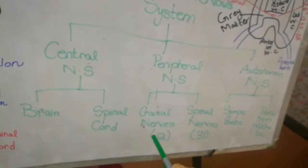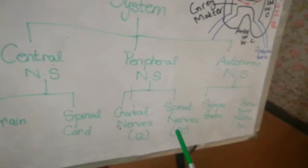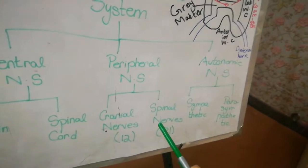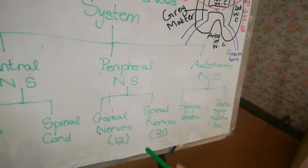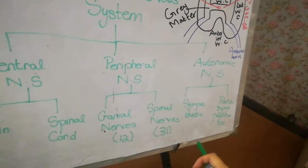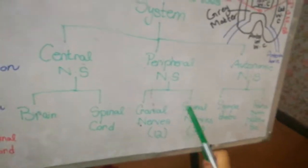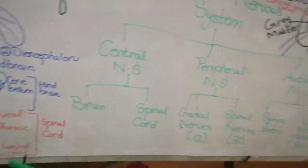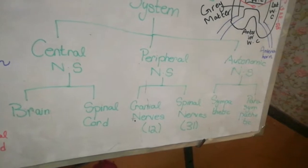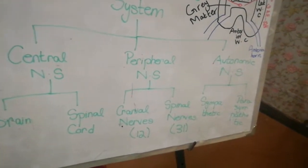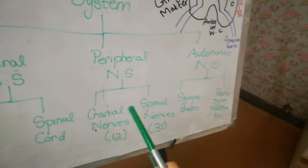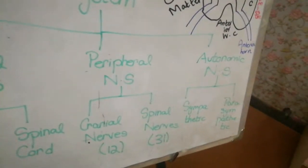Cranial nerves are 12 in pairs and the spinal nerves are 31 in pairs, divided into five regions: cervical, thoracic, lumbar, sacral, and coccygeal. There are eight cervical, twelve thoracic, five lumbar, five sacral, and one coccygeal. That was about the peripheral nervous system.